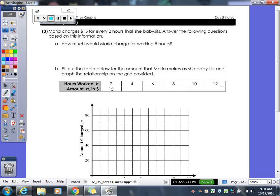Alright, so Maria charges $15 for every two hours that she babysits. Answer the following questions based on this information. So A, how much would Maria charge for working five hours? There are several different ways we could figure out this answer. Who thinks they know one way that we could figure this out? Jordan? Okay, that's one way. Alright, so if we divide, what's 15 divided by 2? And now multiply that times 5. How much would she get? $37.50. Another way you could have done this is you could have set up a proportion of 15 over 2 equals x over 5. Where you've got hours on the bottom, dollars on the top, and then you cross multiply, you would get the same exact answer.